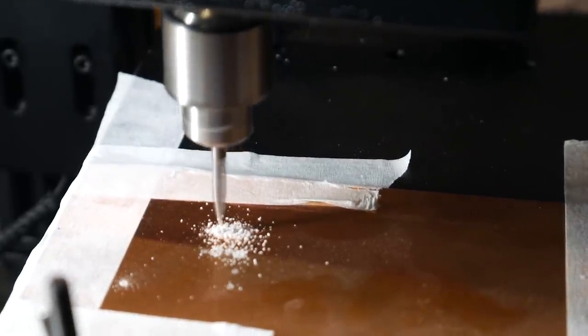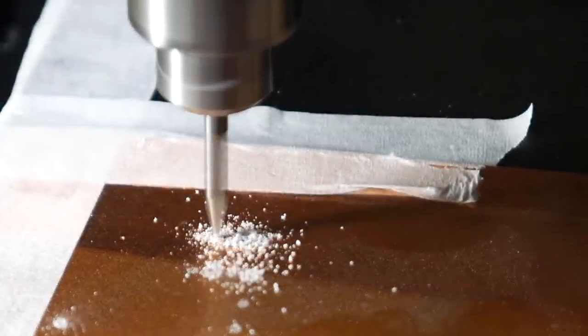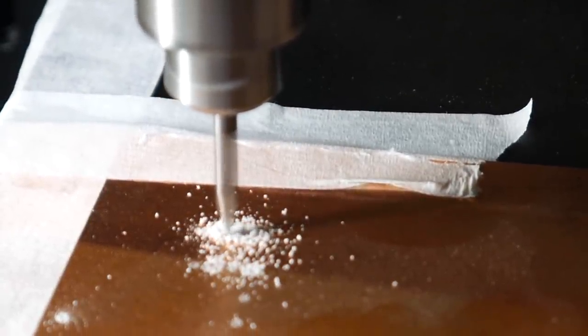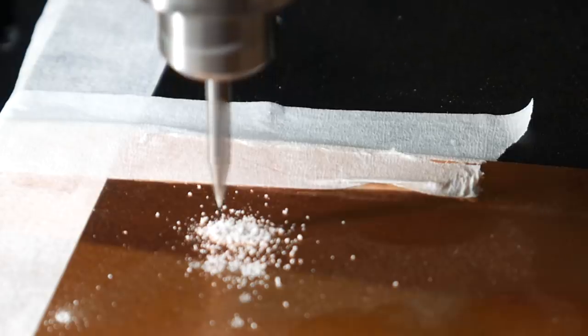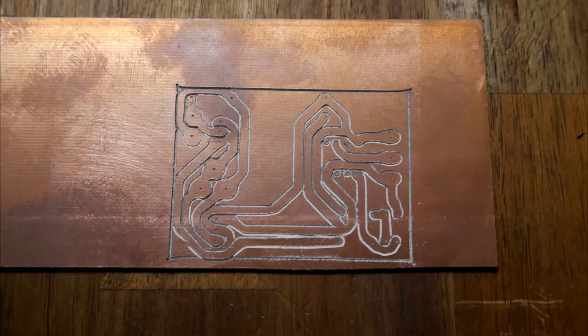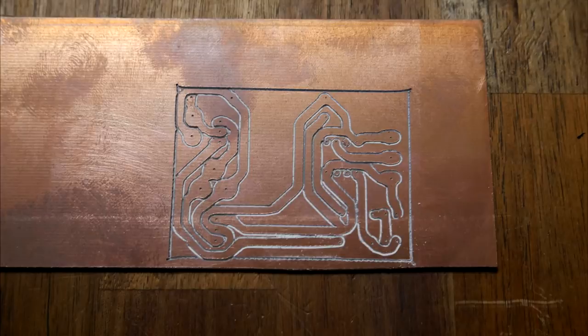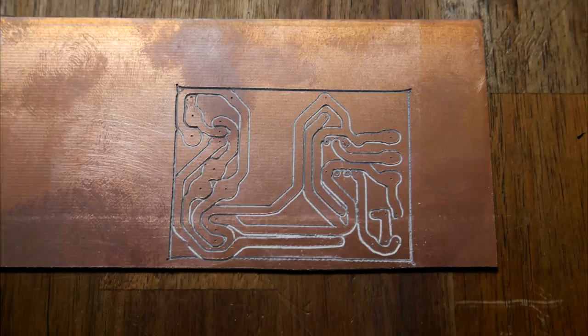So I slowed down the feed rate dramatically, but still experienced some deflection. You can see here in slow motion that the tip of the cutter is flexing from side to side as it completes the circle. In the end I did manage to complete the PCB, but to get it really accurate I would need to slow down the feed rates even more. So I would say you can do PCBs, but they're going to take quite a long time.